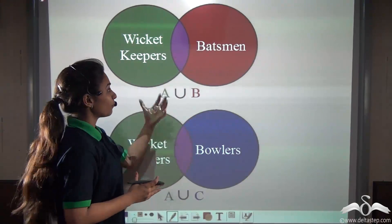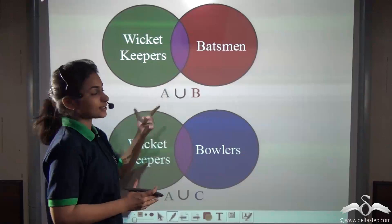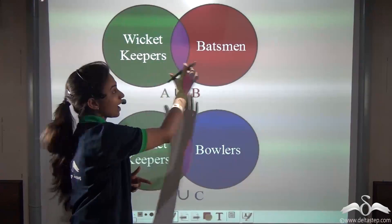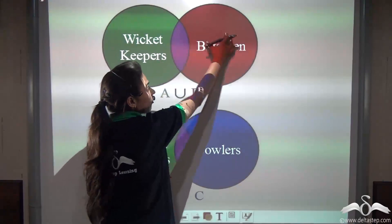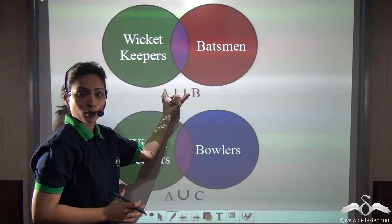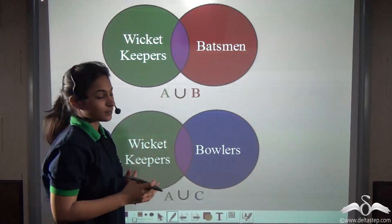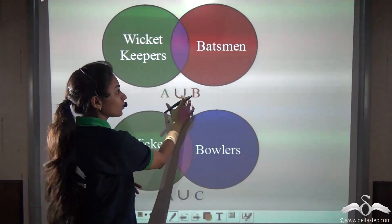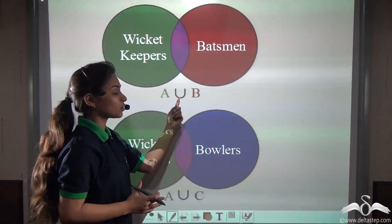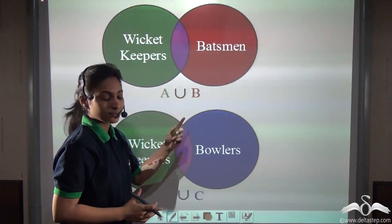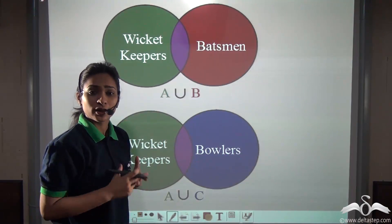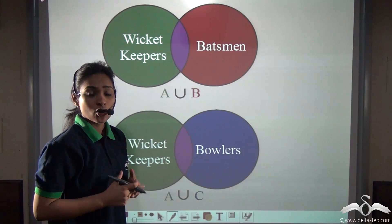So if you put it in sets, you can say set A of wicket keepers and set B of batsmen, and you unite them both to get a team. That is A union B. We call this union in sets. Now you were confused as you did not get bowlers.